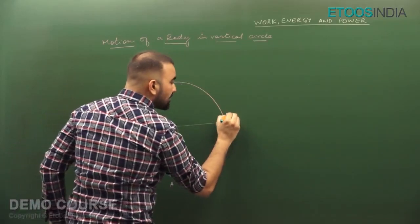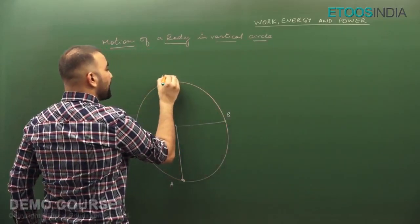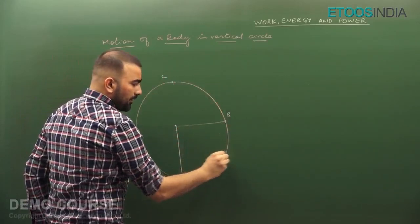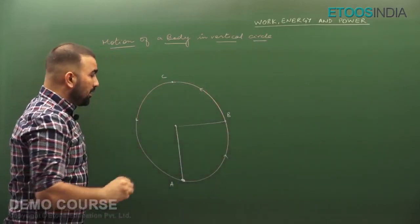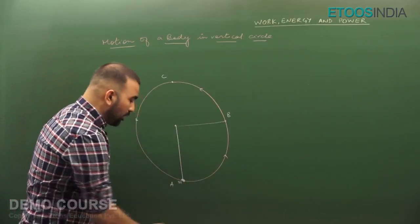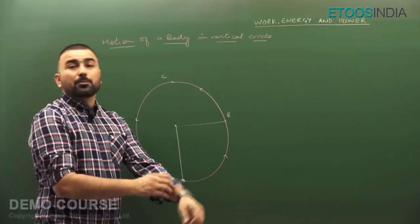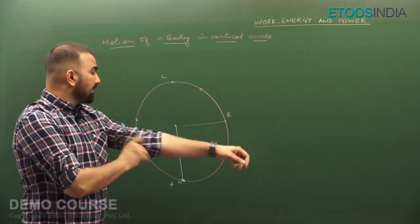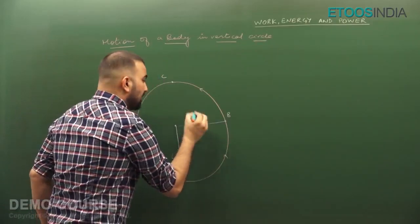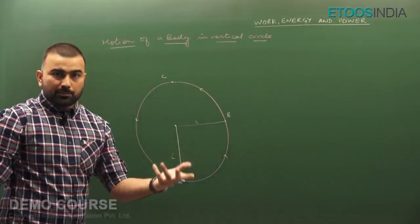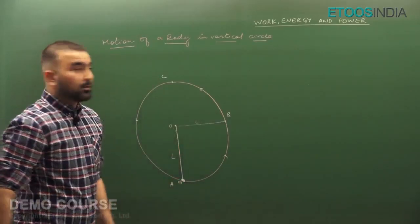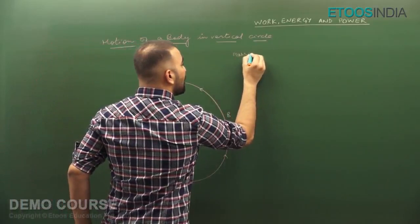This point is taken as A, this point is taken as B, and the top point is taken as C. The motion of the body is anticlockwise. The mass of the ball or body is M — called the bob — and it is connected with a string of length L. The string length L is also the radius of the circular path.